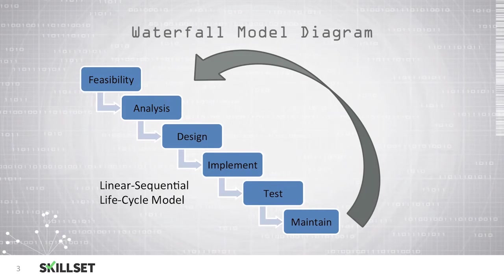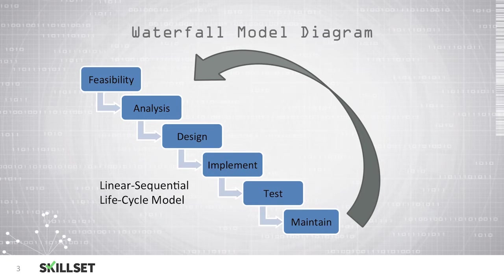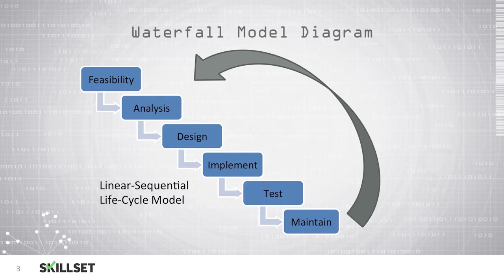Here is a diagram of the waterfall model. We begin with the feasibility phase, moving on to the analysis phase, then to the design phase, and so on. Once we reach the maintenance phase, we can move back to the beginning in case additional changes or improvements need to be made. This is a linear, sequential lifecycle model, meaning it must move in order. The model does not allow you to skip any steps and does not allow you to change anything in a previous step without starting over.